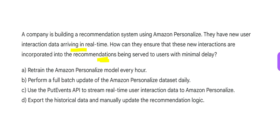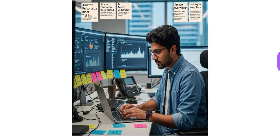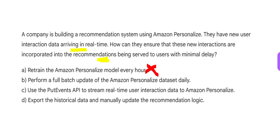The first option says: retrain every hour. But retraining the model every hour — as you can see, there is so much work to do. Will it be feasible for someone to come back every hour and retrain the model? No. This cannot be an ideal solution, so that option is wrong.